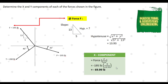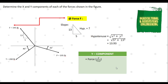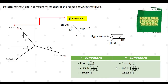Next, we solve for the Y component of force F. Using the formula force times y all over hypotenuse, we substitute: 195 pounds times 13 all over 13.93. We have a positive value because the force is going up to the left direction. The Y component equals 181.98 pounds.